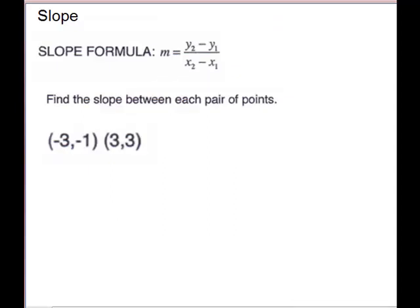First, we'll look at slope if we are given two points on a line. We will use the slope formula. Notice in the formula you have y2 minus y1 — the y is your vertical movement, so this is your vertical change. The denominator is your x's, which is your horizontal change. I like to label my points to make it easy to plug in. Every point gets an x and a y; we use subscripts to tell which point it came from: x1, y1, x2, y2. It doesn't matter which way you label them.